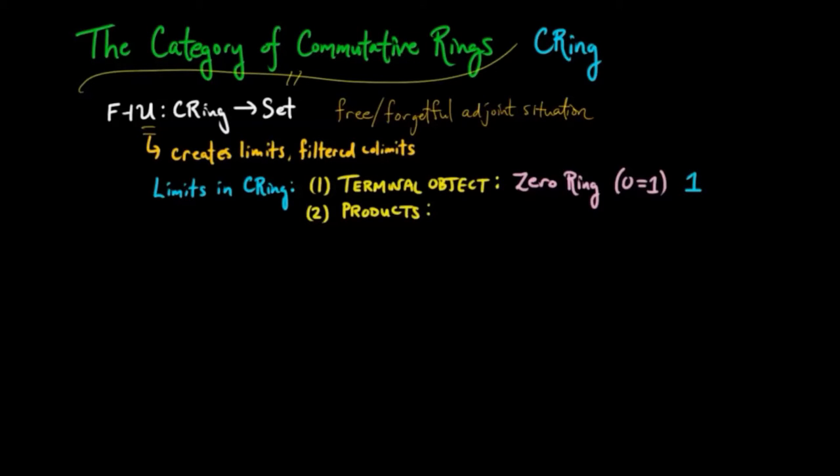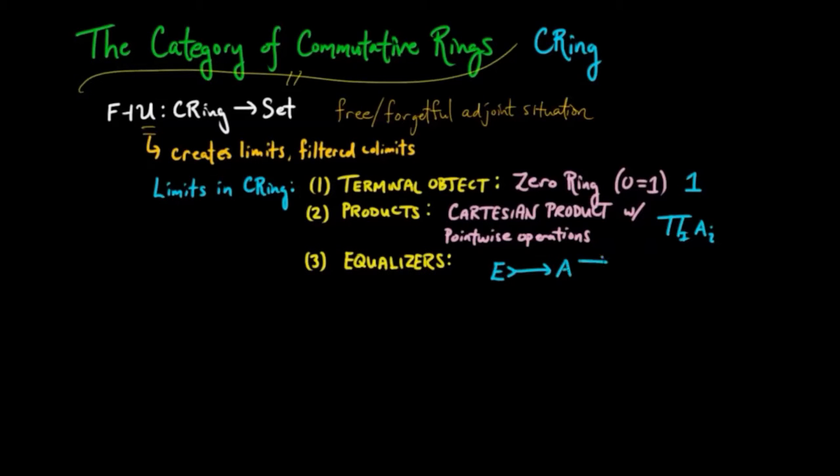The second is products, and that has to be given by the underlying Cartesian product of sets. And we have point-wise operations. Third, for equalizers, we have the normal set theoretic equalizer, and this makes E into a subring of A.